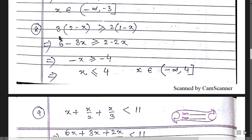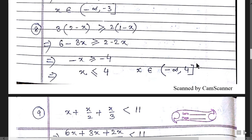Question 8: 3(2 - x) = 6 - 3x. On the right-hand side we have 2 - 2x. After shifting terms, we get -x = -4, and changing the sign gives x ≤ 4. The interval is (-∞, 4], with a square bracket at 4 because 4 is included.